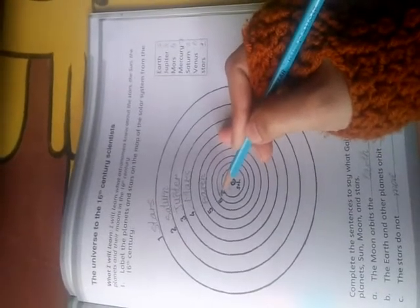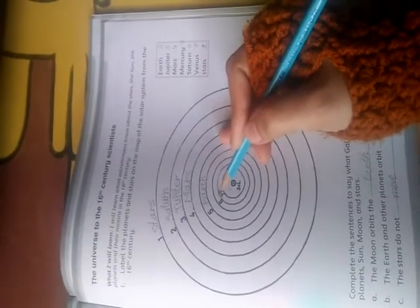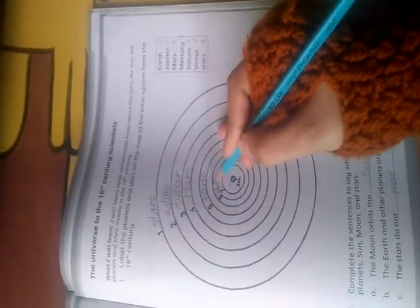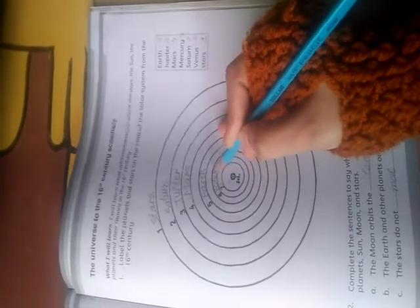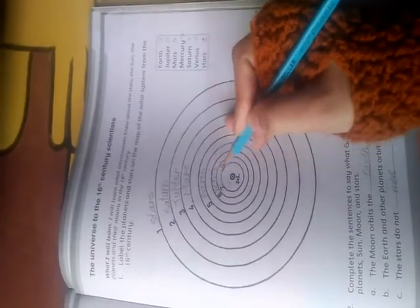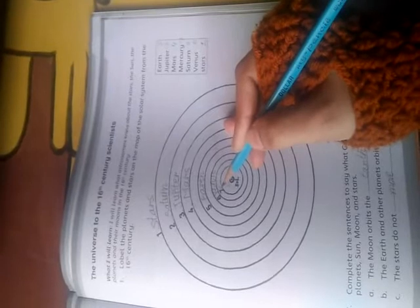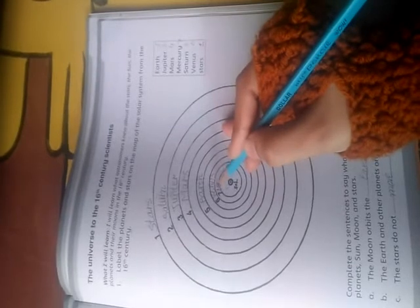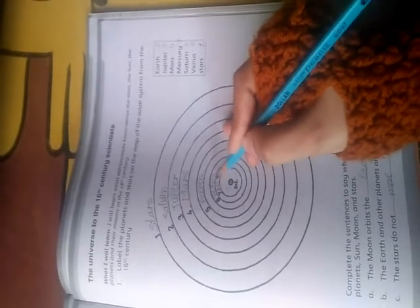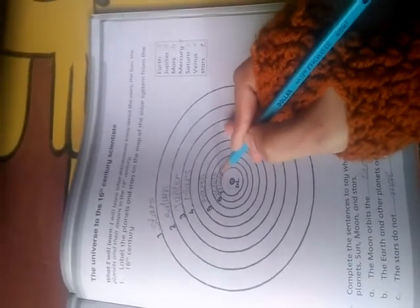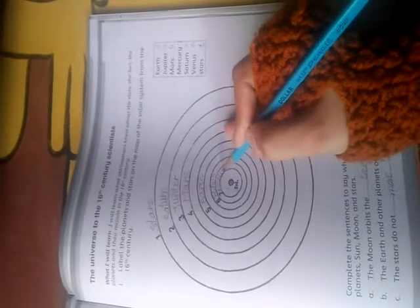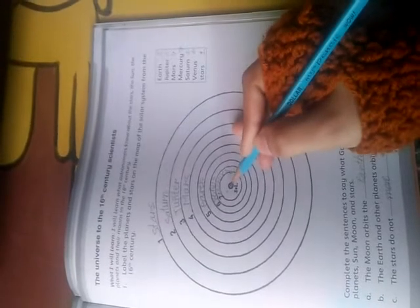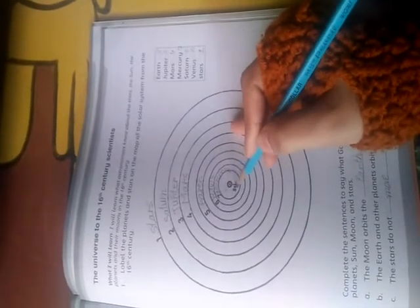On 6th we have to write the planet Venus. V-E-N-U-S Venus. On 7th we have to write the planet Mercury. M-E-R-C-U-R-Y Mercury. And in the center, the sun.